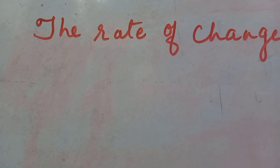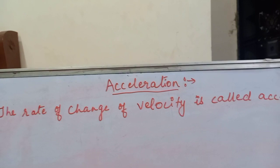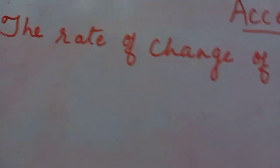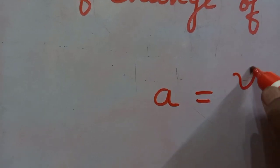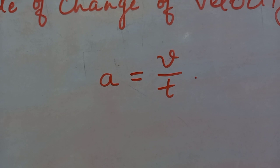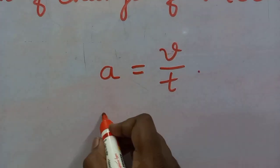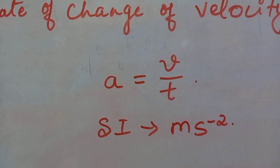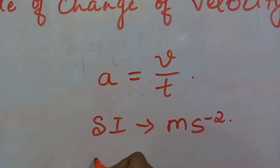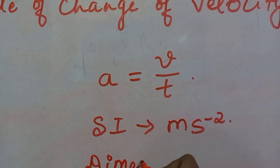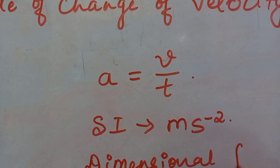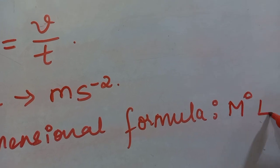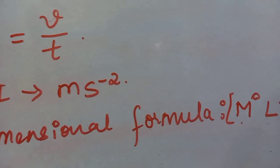The rate of change of velocity is called acceleration. It is denoted as A equals V by T. The SI unit is meter per second square. The dimensional formula is M⁰ L T⁻² — that is the dimensional formula of acceleration.